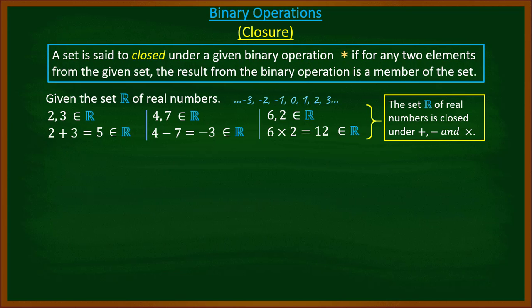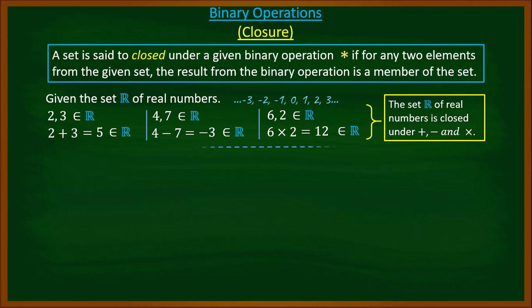The set of real numbers is not closed under division, because division by zero is undefined. For example, two over zero is undefined. Therefore the set of real numbers is not closed under division.